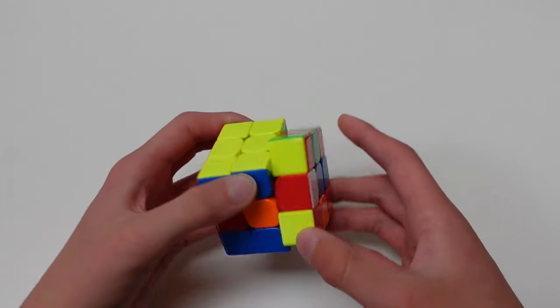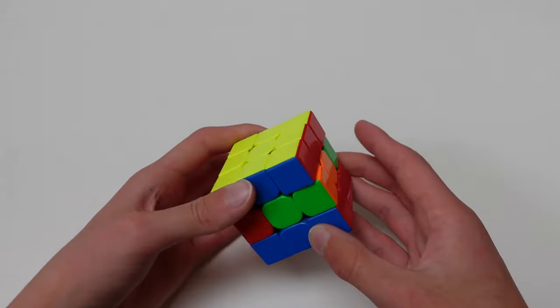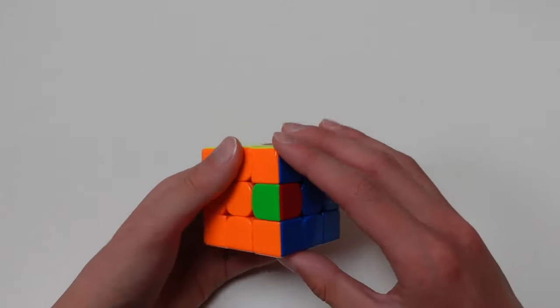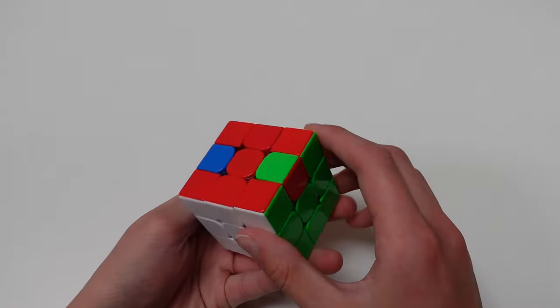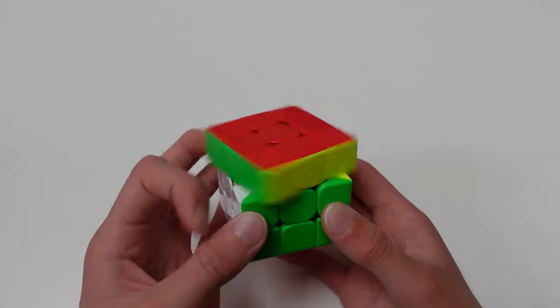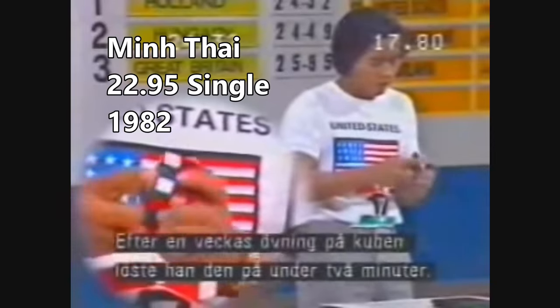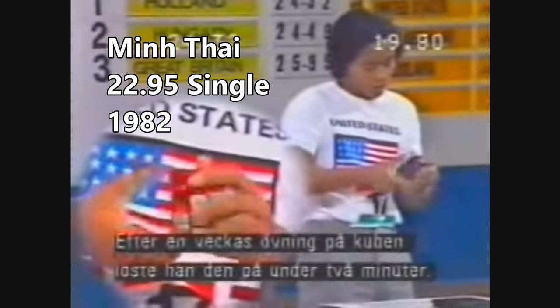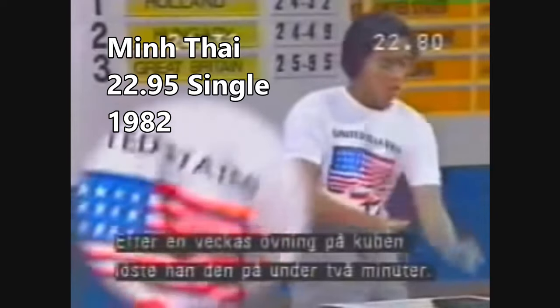Corners first is another method a few beginners use when first learning the Rubik's Cube instead of layer by layer. But it is a lot more uncommon as you do need to know how to solve the 2x2 stage, and some of the algorithms at the end can be a bit tricky. Also, you have less freedom to do things. Fun fact, the first ever official Rubik's Cube world record of 22 seconds was set using the corners first method.